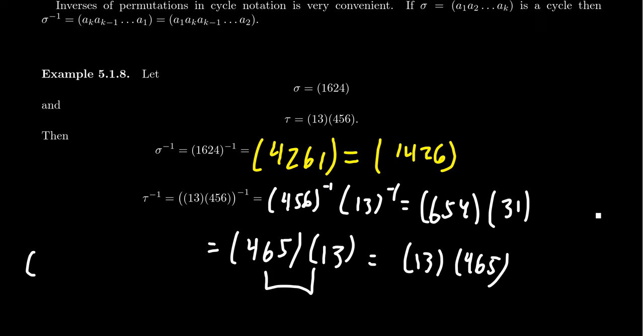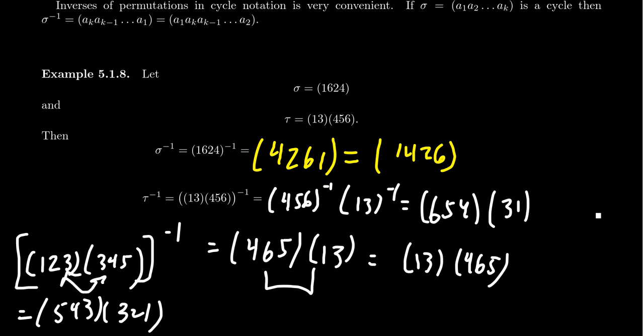If you just had like two permutations (1, 2, 3) and then you had, say, like (3, 4, 5), notice in this situation, these are not disjoint. So if you want to find the inverse of this, you definitely need the shoe-sock principle. So you're going to get (5, 4, 3)(3, 2, 1). And you can reorder them if you want to, but the order gets swapped around when you have to take inverses. That's an important thing to remember here.